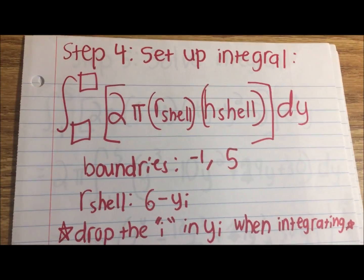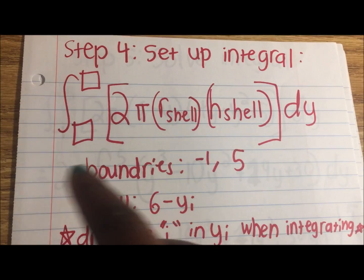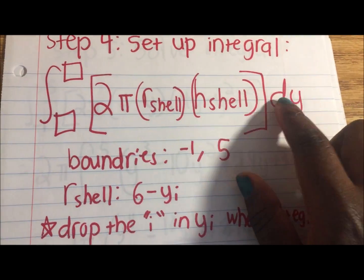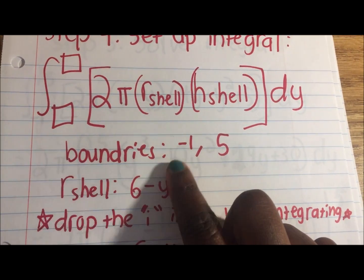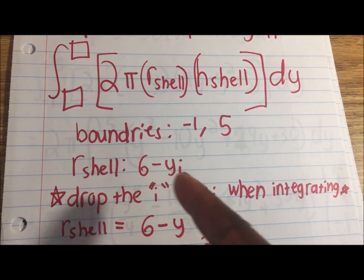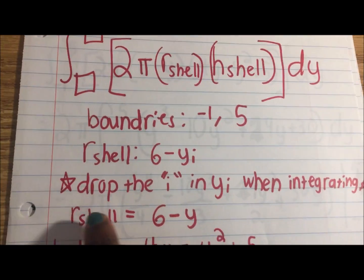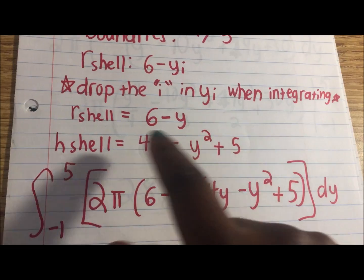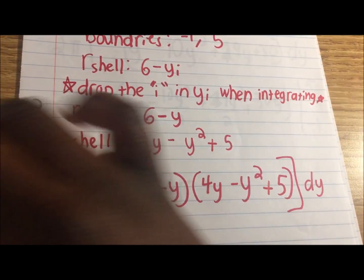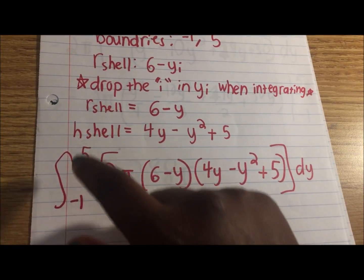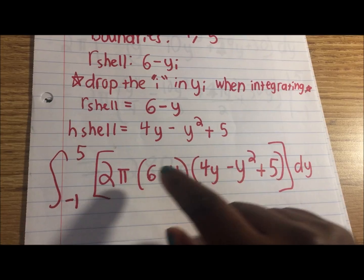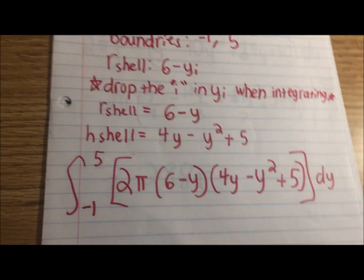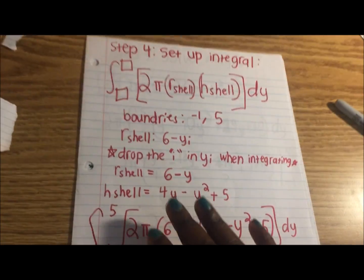Step four, set up the integral. The shell method equation is the integral of 2π · r_shell · h_shell dy, since we're working in terms of y. The boundaries are −1 and 5, r_shell is 6 − y (dropping the i), and h_shell is 4y − y² + 5. So the integral is from −1 to 5 of 2π(6 − y)(4y − y² + 5) dy. If the question says just set up the integral and don't evaluate it, you can stop here.